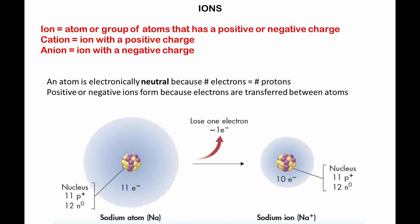Let's have a look at ions. An ion is an atom or group of atoms that has a positive or negative charge. A cation is an ion with a positive charge. An anion is an ion with a negative charge. An atom is electronically neutral because the number of electrons is equal to the number of protons. Positive or negative ions form, because electrons are transferred between atoms. Let's have a look at the sodium atom. The sodium atom has 11 protons and 12 neutrons in its nucleus. If a sodium atom loses one electron, it becomes a positive sodium ion.